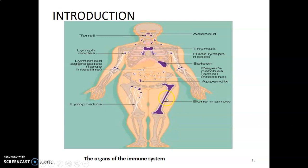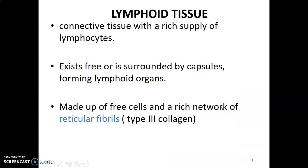The thymus is in the anterior mediastinum, the adenoids in the nasopharynx, the tonsils in the oropharynx, the spleen in the left upper quadrant, and bone marrow where T and B cells are produced. We have lymph nodes in the cubital fossa, axilla, parasternal region, occipital region, and cervical region. Lymphoid tissue is basically connective tissue with immune cells, mainly lymphocytes. They may be free or encapsulated in lymphoid organs, made up of free immune cells and a rich network of reticular fibers.